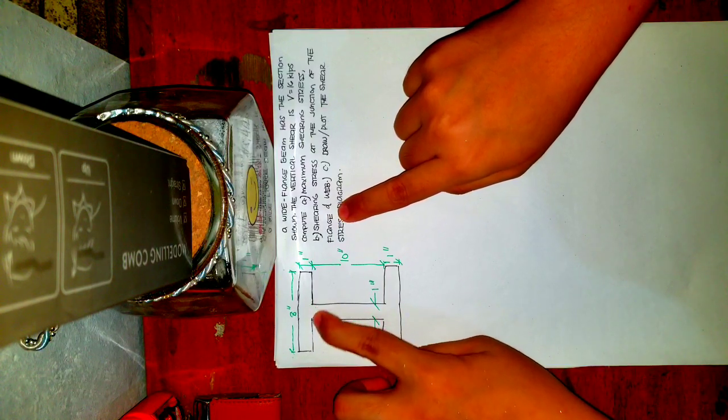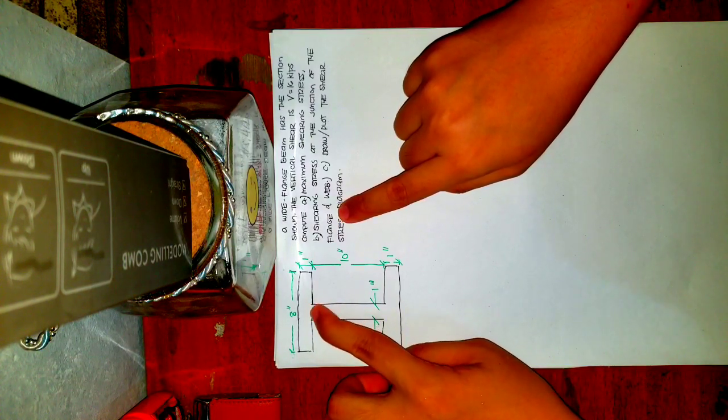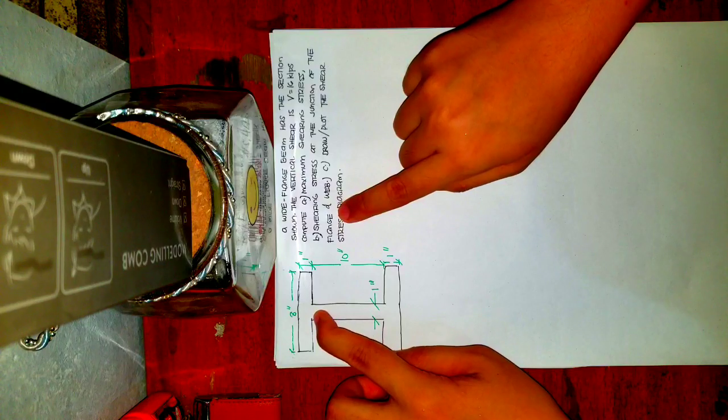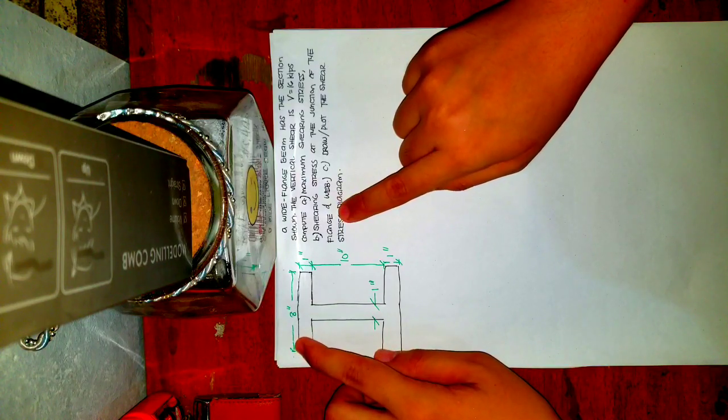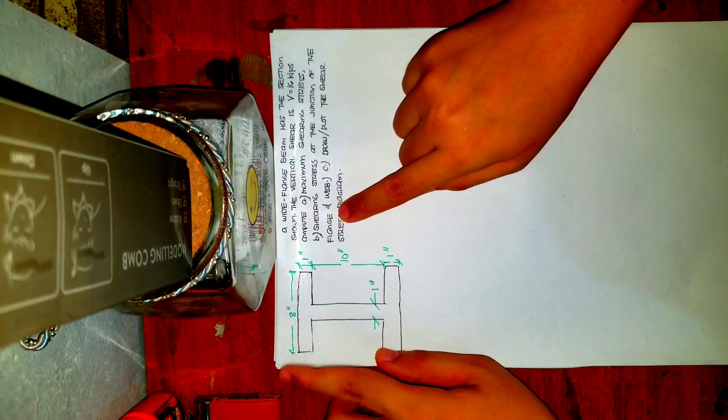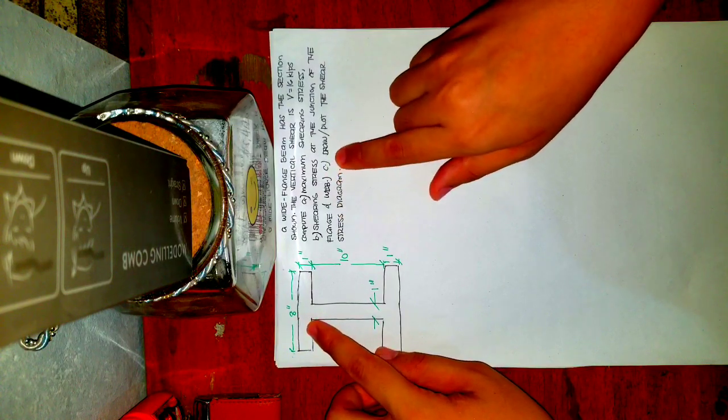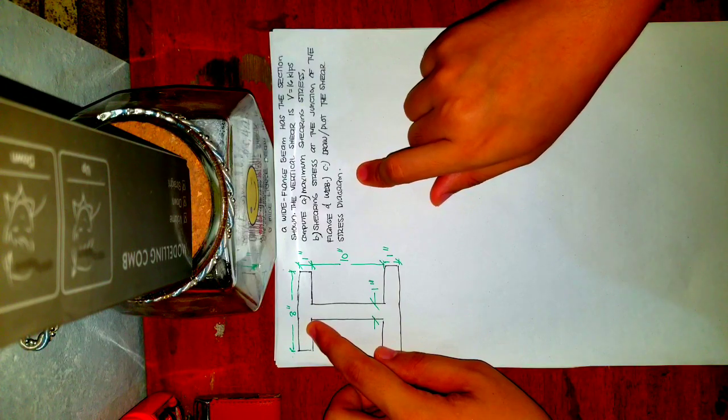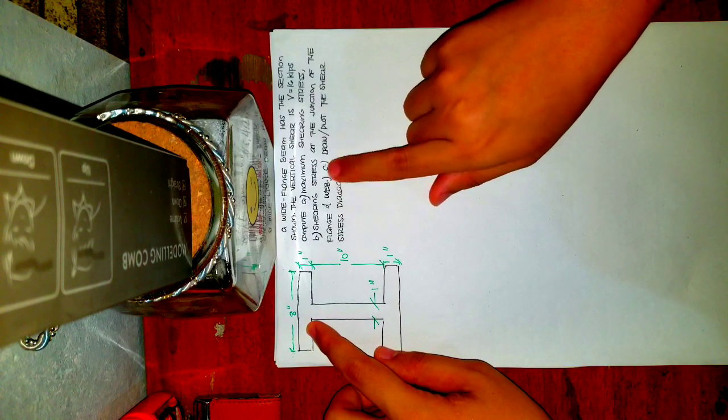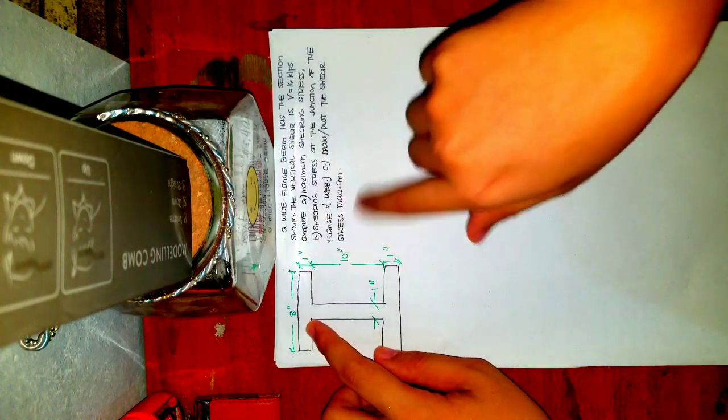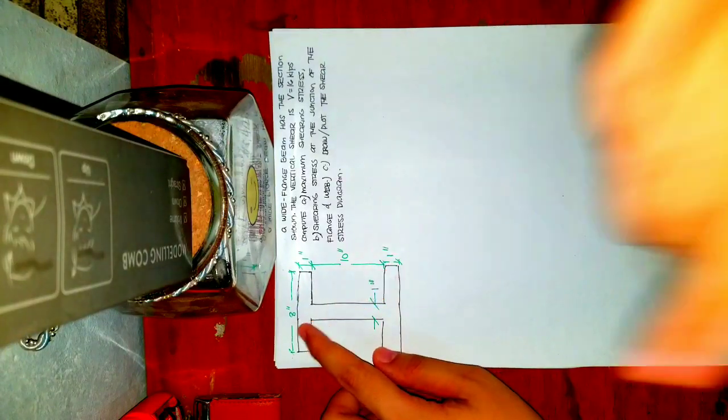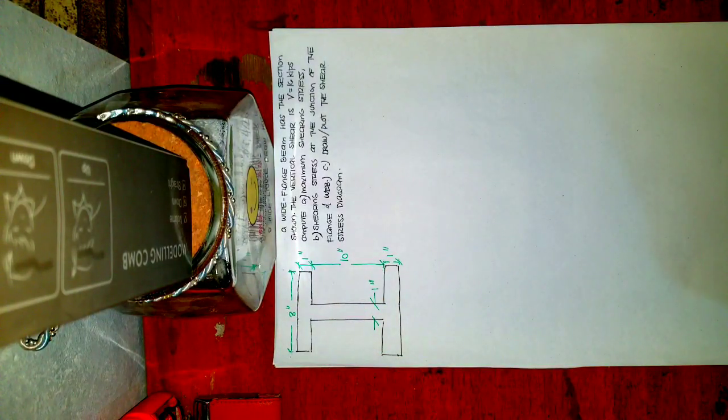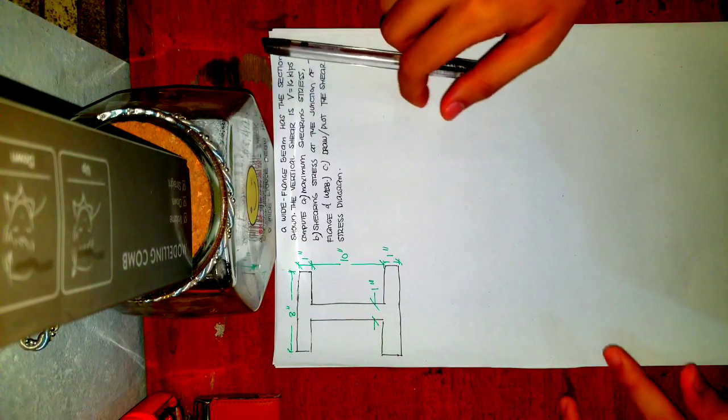The problem asks us to compute the maximum shearing stress for letter A, and for letter B, compute the shearing stress at the junction of the flange and web. So ito yung pinapahanap, kasi dito meron kang dalawang base na pwede i-consider. And then last, draw or plot the shear stress diagram. So ipapakita natin yung stress diagram for this I section.